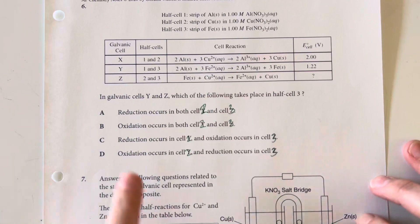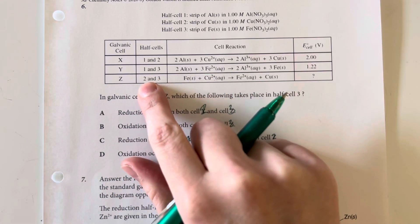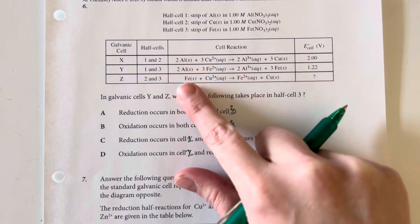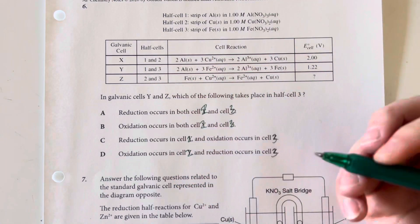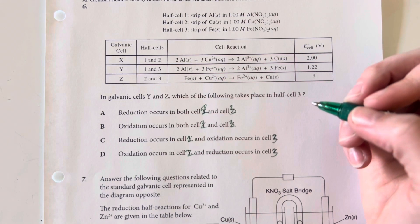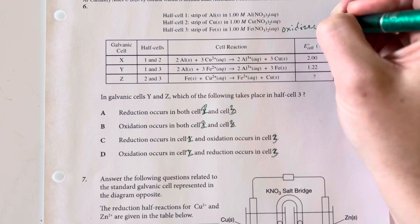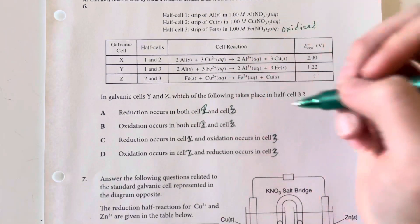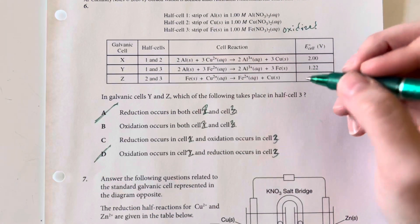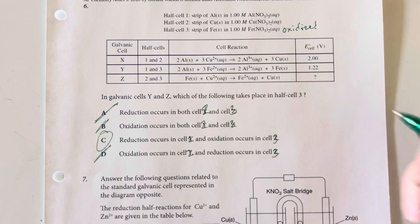I have copper going from an oxidation state of 0 to +2, which means it's being oxidized, and that occurs in cell Z. So cell 3 is oxidized. Anything that doesn't say cell 3 is oxidized, I'll eliminate. We cannot have oxidation in both—we must have a reduction with each oxidation. So option C is my best answer.